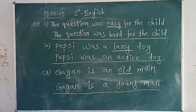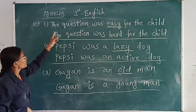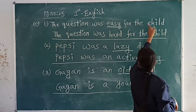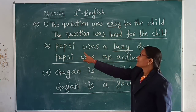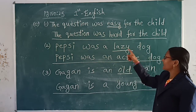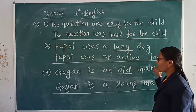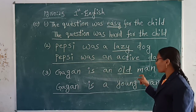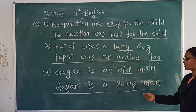First, describing words are underlined, then we write the opposite in the sentence. The question was easy for the child — easy opposite is hard — the question was hard for the child. Pepsi was a lazy dog — lazy opposite is active — Pepsi was an active dog. Gagan is an old man — old opposite is young — Gagan is a young man.